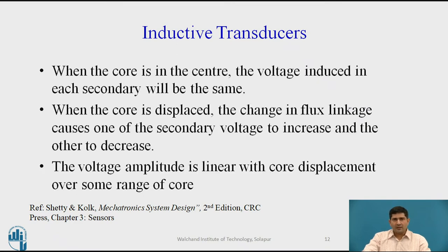When the LVDT core is at the center, the voltage induced in each secondary will be the same. When the core is displaced, there is a change in flux linkage, which causes one of the secondary voltages to increase and the other to decrease. The voltage amplitude is linear with core displacement over some range of the core, and this is typically where the measurement will be done. If you intend to measure in the nonlinear range, then corresponding signal conditioning circuitry will be required.